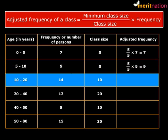The third one, carefully, minimum class size, well that will remain the same, 5. And this class size, this time it is 10 to 20, so it is 10 into, what is the frequency? 14. So we get the adjusted frequency as 7.